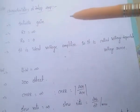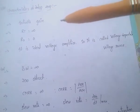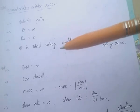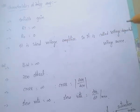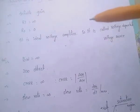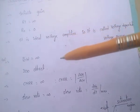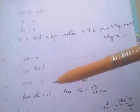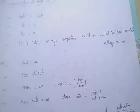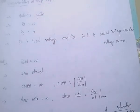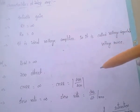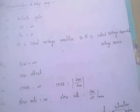Once again, the characteristics of ideal op-amp: first, infinite gain; input resistance or impedance is infinite; output resistance is zero; it is an ideal voltage amplifier, called voltage dependent voltage source; bandwidth is infinite; zero offset; CMRR infinite; and slew rate is also infinite. These characteristics of ideal op-amp are very, very important for any competitive exams.